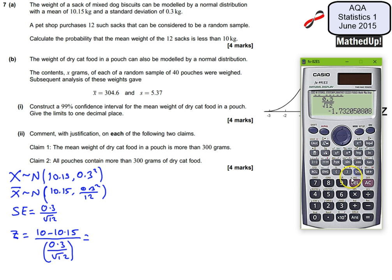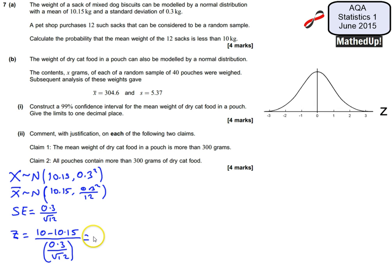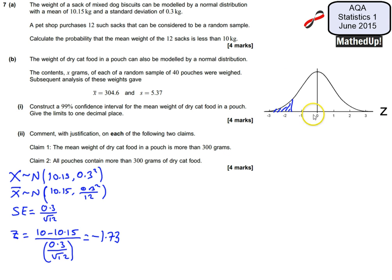That gives me a Z value of negative root 3, or approximately negative 1.73. So Z = −1.73. On a normal distribution diagram, −1.73 is to the left of centre, and we want the probability that the mean weight is less than this value — that's the left-hand tail area.